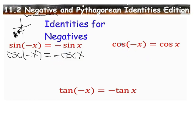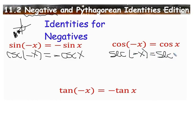For cosine, the identity works differently: the cosine of a negative angle equals a positive cosine of the positive version of the angle. And since secant is the reciprocal trig function of cosine, it follows the same identity. If you know one, you know the other.